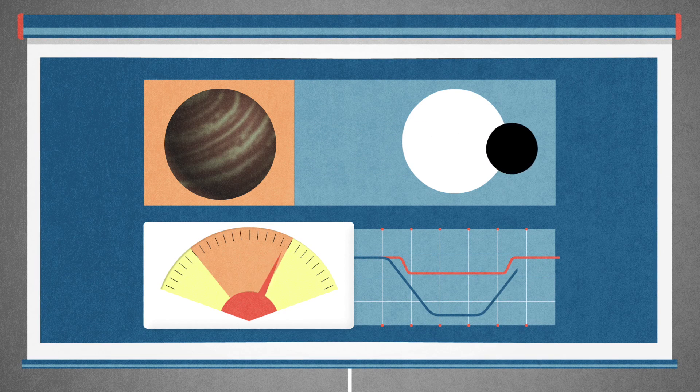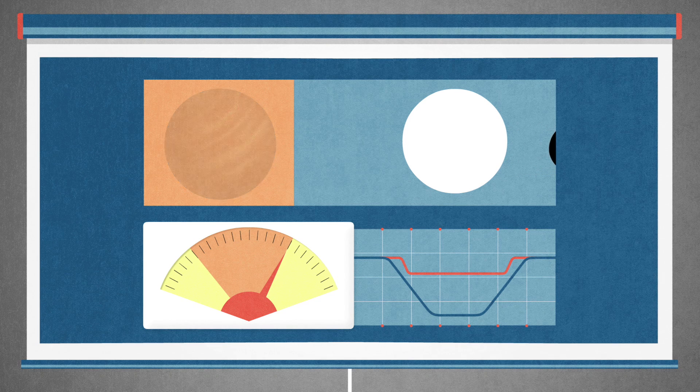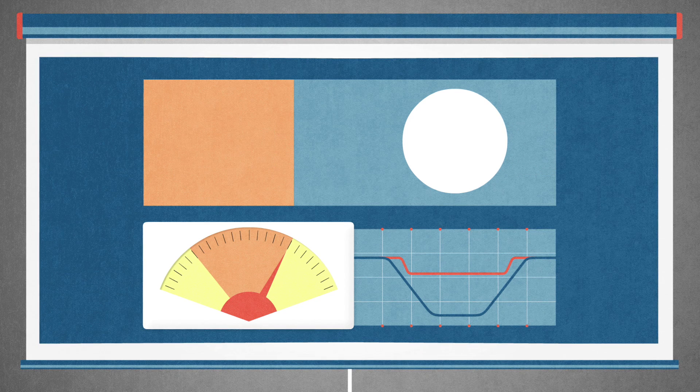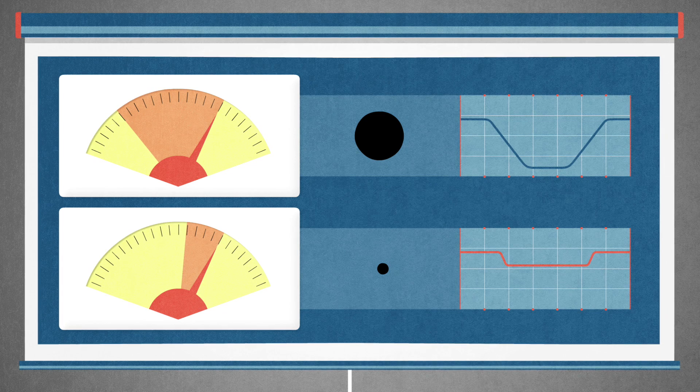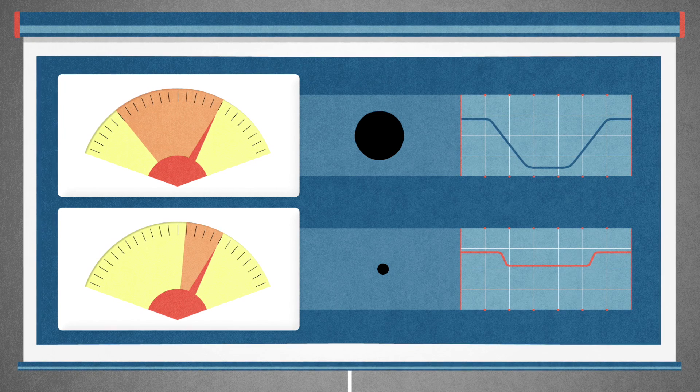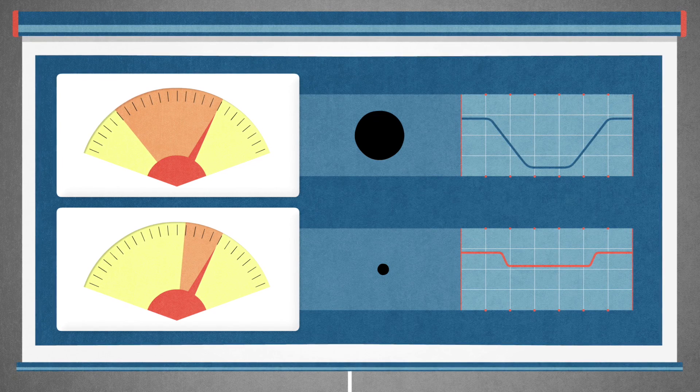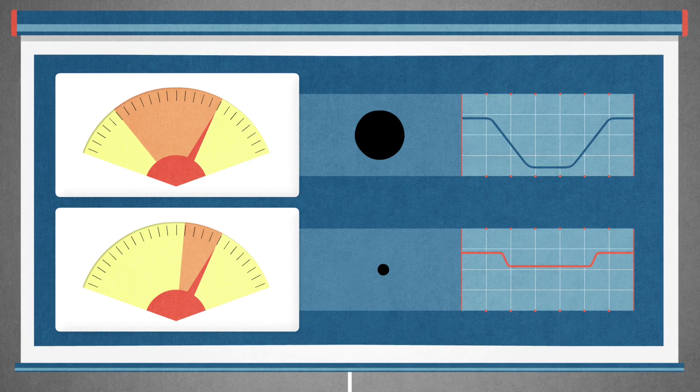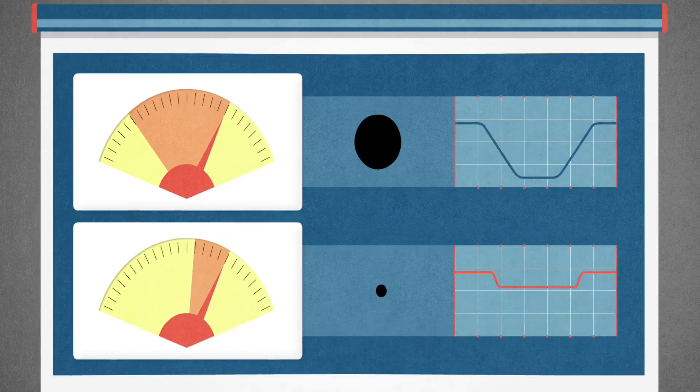Planets come in a lot of different sizes, and the bigger planets block more of the light that reaches us, and smaller planets less. These are tiny changes, but measuring them with CHEOPS allows astronomers to figure out exactly the size, the radius, of a planet.